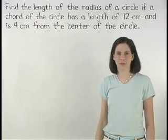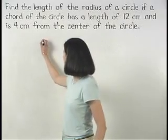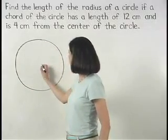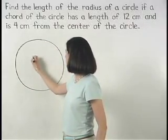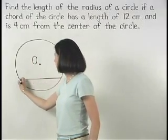Let's start this problem by drawing a picture. We have a circle which we'll call circle O and we have a chord which we'll call AB.